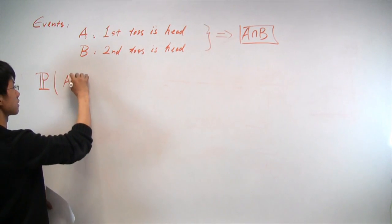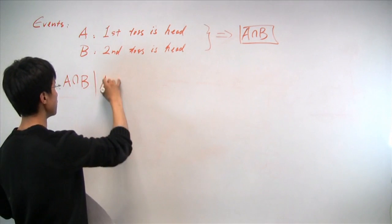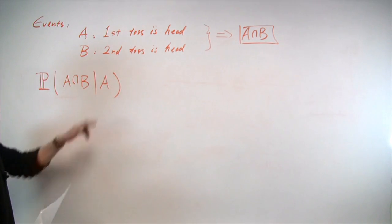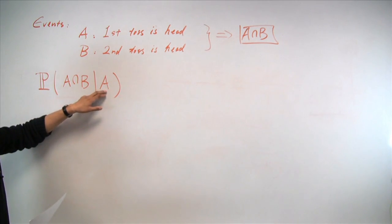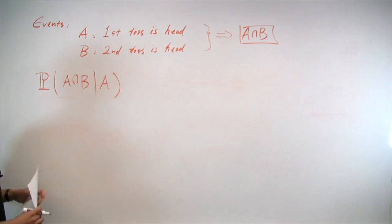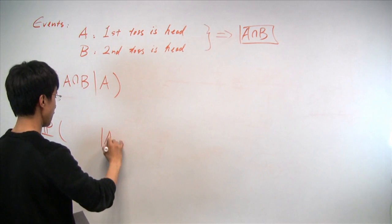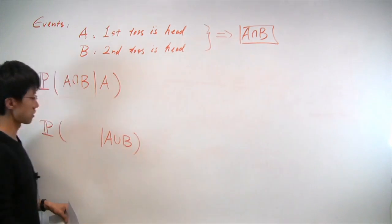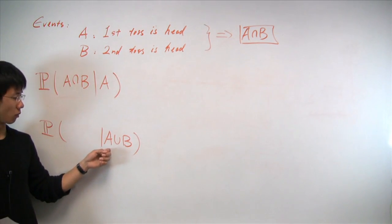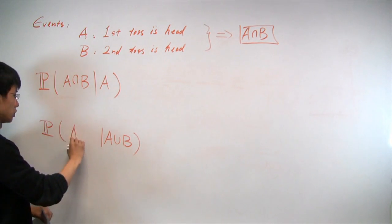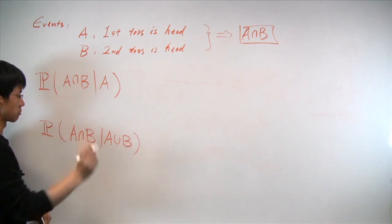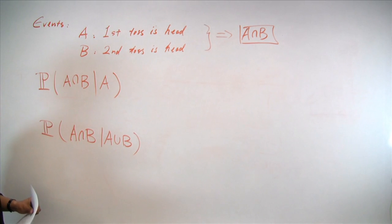In the first case, we'll be conditioning on that we know the first coin toss is a head. I'd like to know what the probability of A and B is. In the second case, we know that at least one of the two coin tosses is a head expressed in the form A union B. And under this conditioning, what is the probability of A and B, an intersection B?